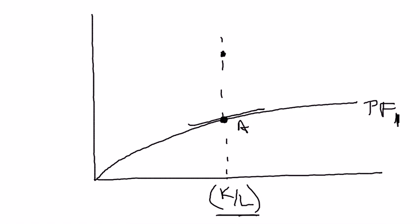So we've got our frame of reference right here, production function 1. Let's assume that the capital-labor ratio is K/L - I just need a point at random to illustrate things, which means we're at point A.